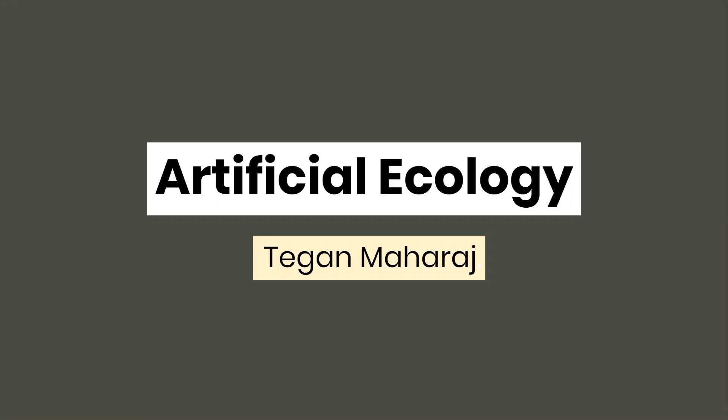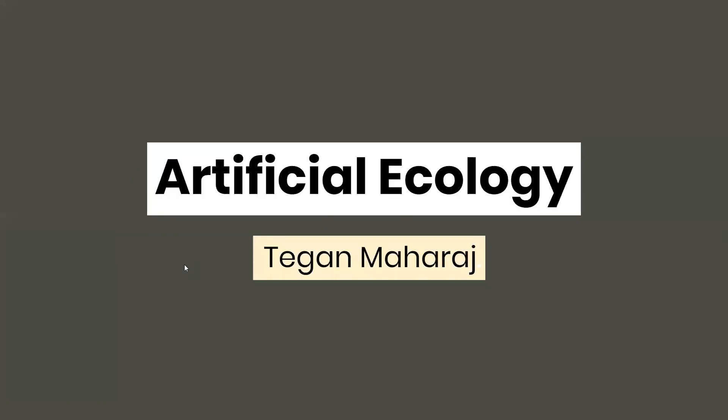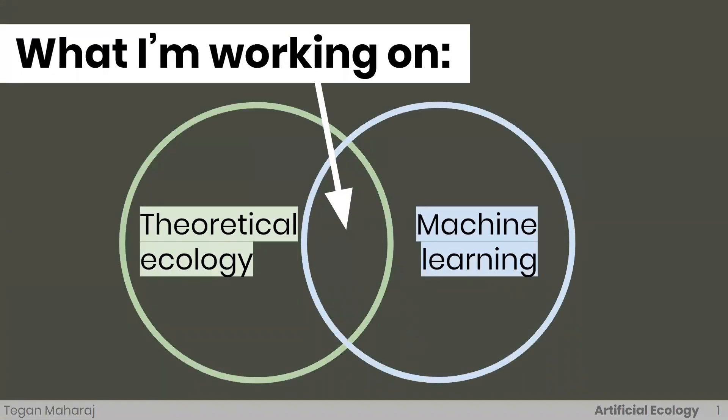Okay, basically I'll get started now. What I mean by artificial ecology here is everything that I'm working on, which is stuff at the intersection of theoretical ecology and machine learning. Even more specifically, what I mean by artificial ecology is treating artificial systems and the development of learning algorithms similarly to the way we study the dynamics and other properties of ecological systems.